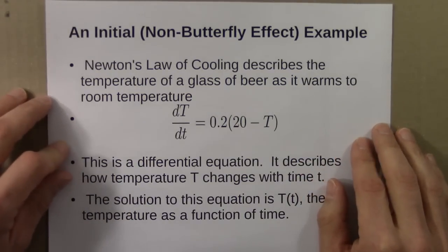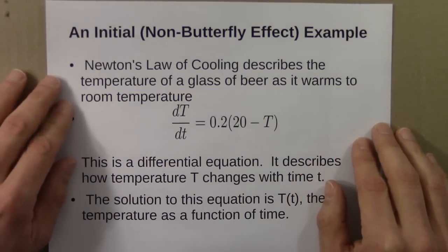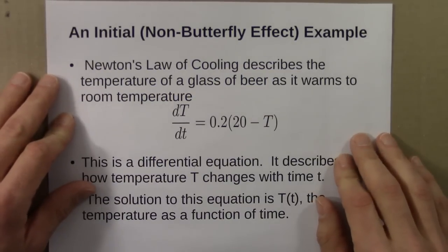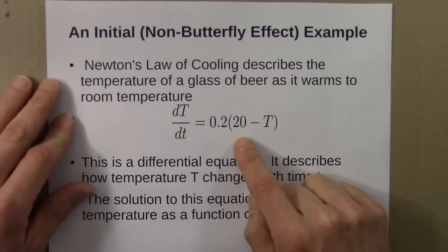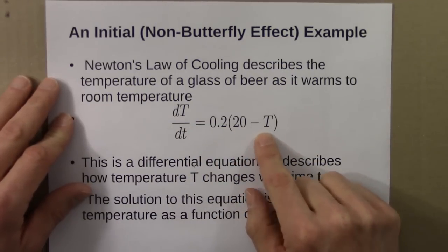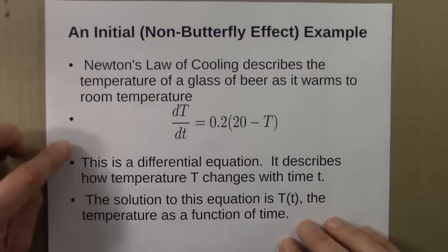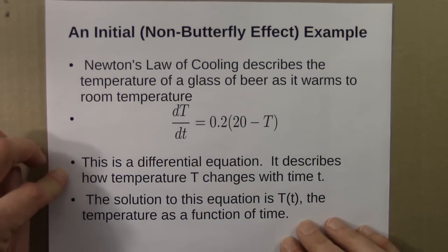Newton's law of cooling describes the temperature of a glass of beer as it warms up to room temperature. This is the equation, hopefully by now familiar. 20 is the room temperature, capital T is the temperature of the beverage. This is a differential equation, so rather than changing in steps, in clicks, the temperature changes continually with time.